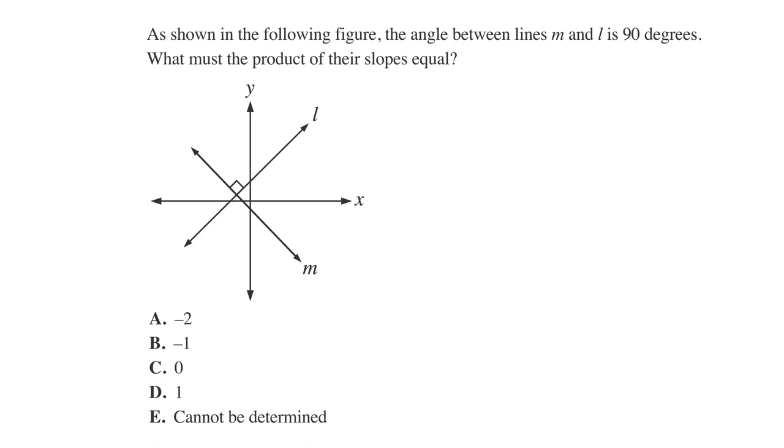Welcome back. Let's go through a breakdown of how to solve this problem. The answer choices are A, negative 2, B, negative 1, C, 0, D, 1, and E cannot be determined. We'll underline the facts. Angle between lines M and L is 90 degrees. Next, circle the key words, product and slopes. Finally, label the answer choices product of slopes.